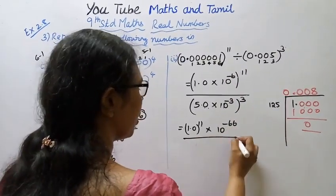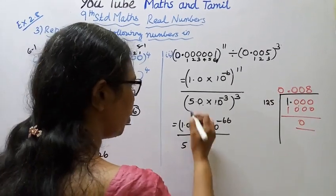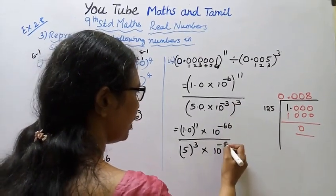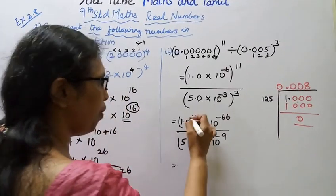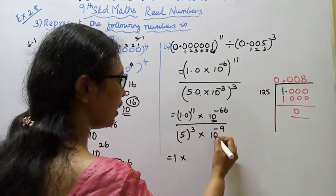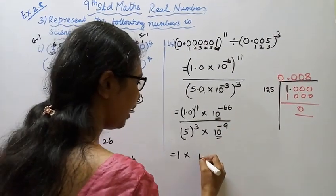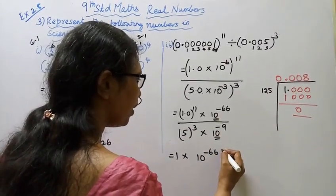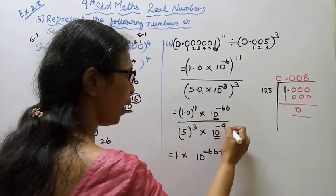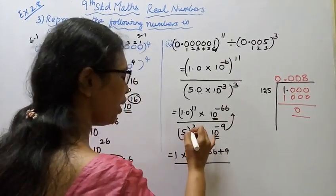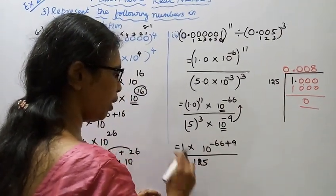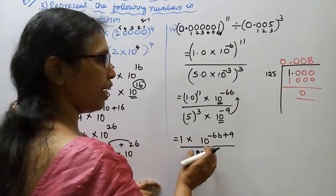Numerator exponent: minus 66. Denominator: 5.0 into 5 — 5 to the power of 3 — into 10 to the power of minus 3 times 3, which is minus 9. Now 1 to any power is 1. So numerator becomes 1.0 into 10 to the power of minus 66. For denominator: 5 cubed is 125. So we have 1.0 into 10 to the power of minus 66 divided by 125 into 10 to the power of minus 9.